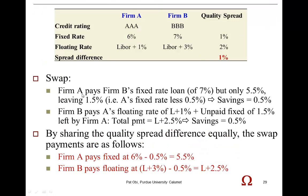Firm A pays Firm B's fixed rate loan of 7%, but only 5.5%, leaving 1.5% with B. That amounts to Firm A's fixed rate loan rate of 6% minus 0.5%, so the savings of 0.5% is that quality spread difference. Firm B would pay all of the floating rate interest of LIBOR plus 1, plus the unpaid fixed rate of 1.5% that Firm A left unpaid, so the total payment comes to LIBOR plus 1 plus 1.5, which is LIBOR plus 2.5. Nevertheless, Firm B enjoys savings of 50 basis points — saving 0.5% over LIBOR plus 3%.